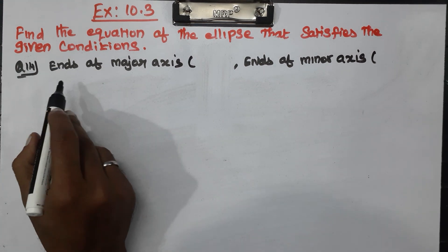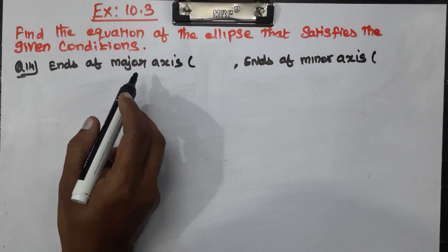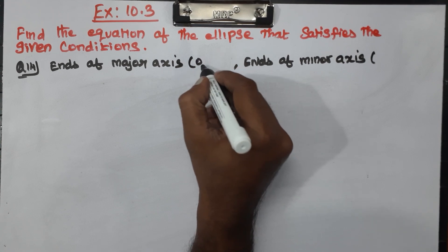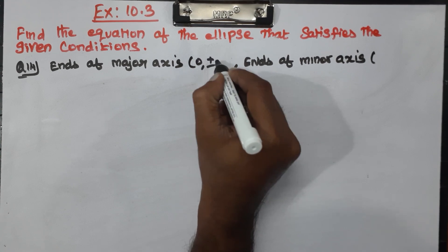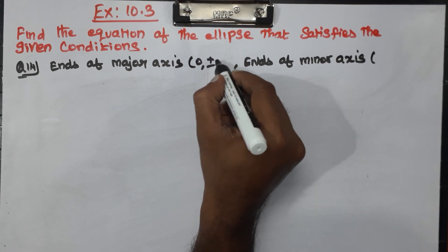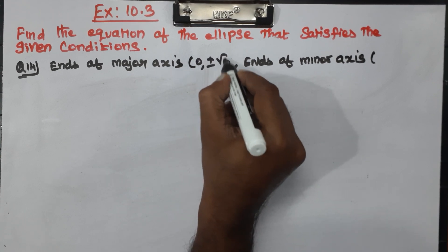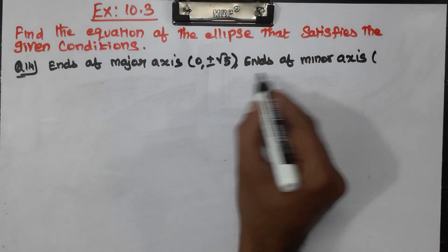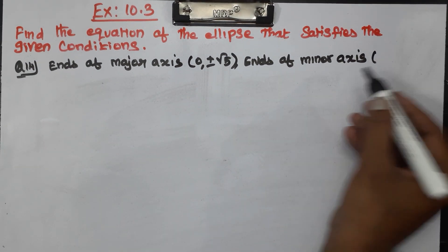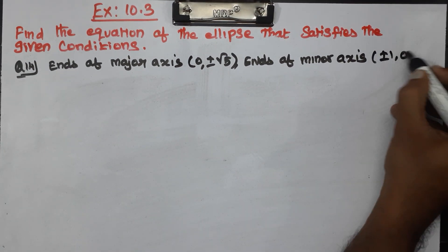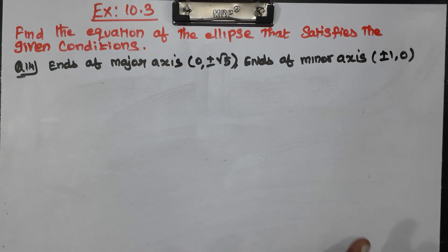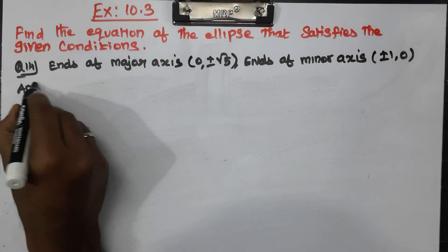Question Number 14: the ends of the major axis are at 0, plus or minus root 5.